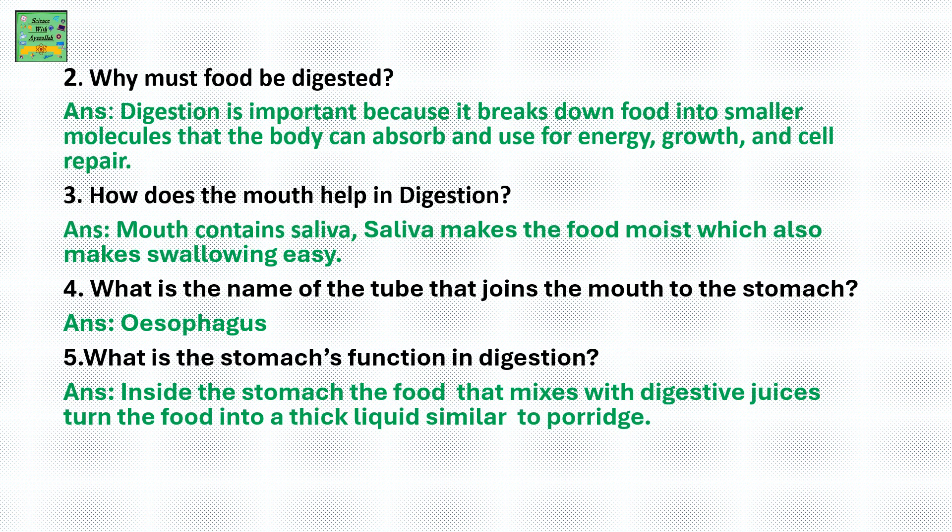What is the name of the tube that joins the mouth to the stomach? It's the esophagus. What is the stomach's function in digestion? Inside the stomach, the food mixes with digestive juices, which turn the food into a thick liquid similar to porridge.